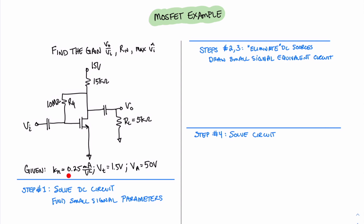We have a few parameters given about the transistor. The KN value is 0.25 milliamps per volt squared, our threshold voltage is 1.5 volts, and we have an early voltage of 50 volts. Following our steps, we know that our first step is to look at the DC analysis of this circuit. The goal in doing the DC analysis is to find our small signal parameters.